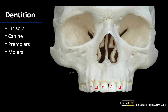The canines are going to be next to the lateral incisors and the premolars. Generally they have a bit more of a sharper border, though not always, and this definitely will get worn down with age. These tend to be a little bit larger than the lateral incisors.